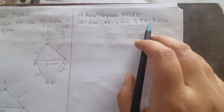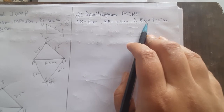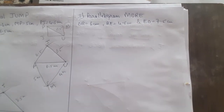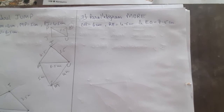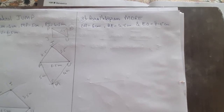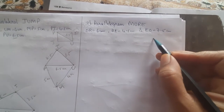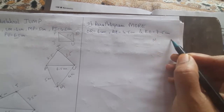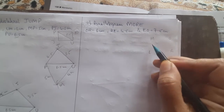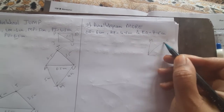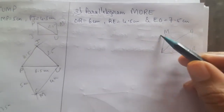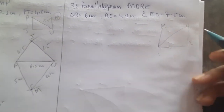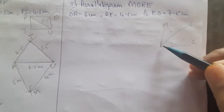As usual, first we should construct the triangle and then transfer it into a parallelogram by constructing the fourth vertex. For M-O-R-E, O-E and M-R are the diagonals. Either way you want, you can take.